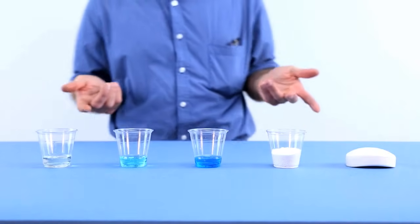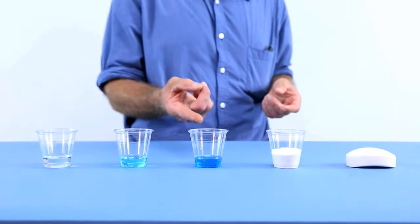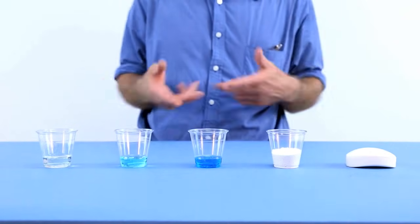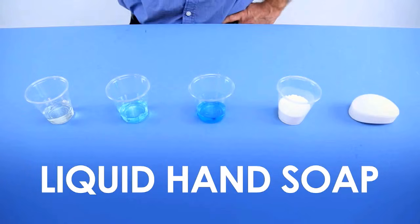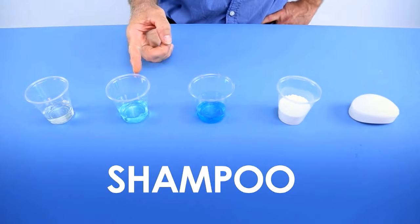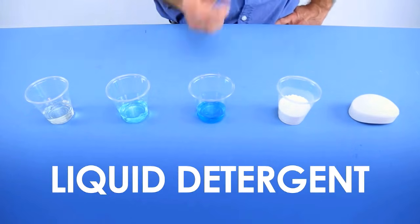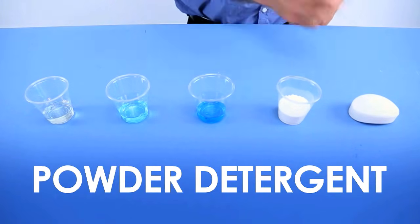You know if you decide to do this activity you don't necessarily have to use the liquid dish detergent like we did. You could try different kinds of soap and detergent. You have liquid hand soap, shampoo, liquid dish detergent, a powdered laundry detergent or a bar of soap.